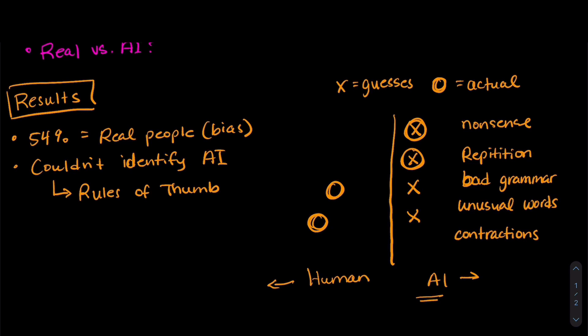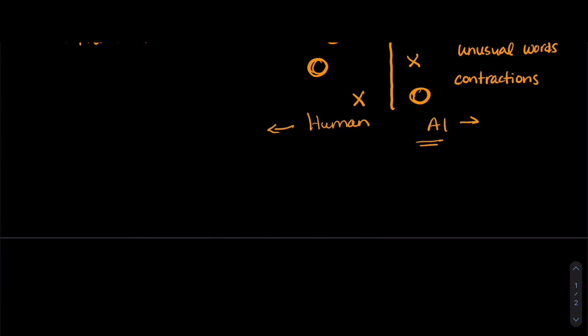Same goes for using unusual words. And then the opposite is true for contractions. People guessed that using contractions in a bio meant that it was written by a human. And it was actually more likely that the AI wrote those bios. So looking at all this, what does all this actually mean?